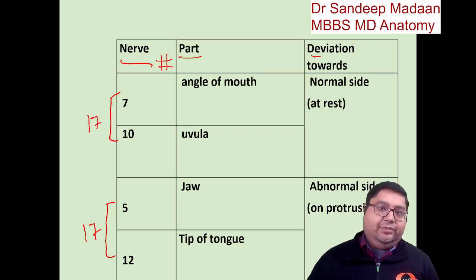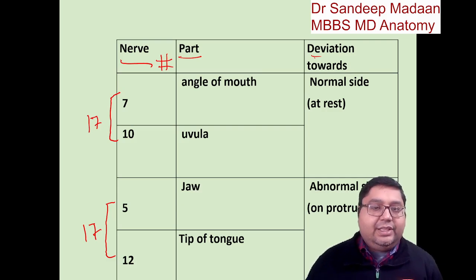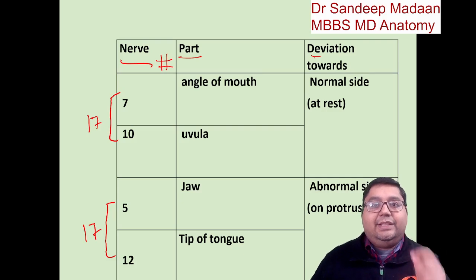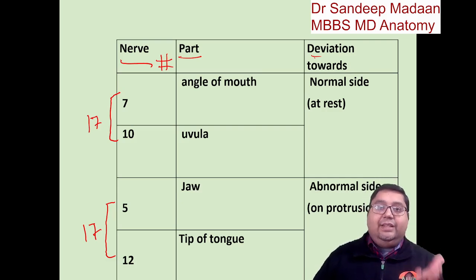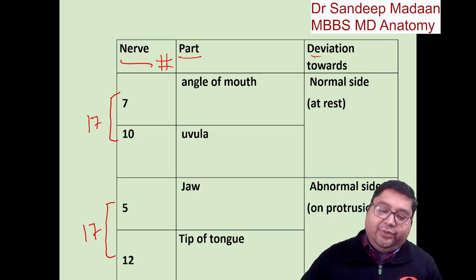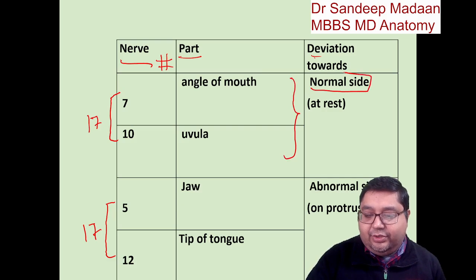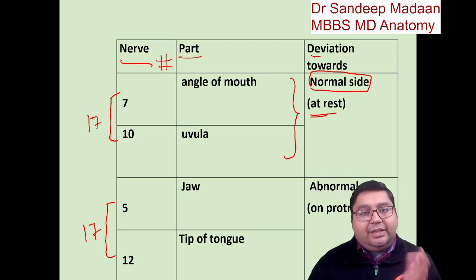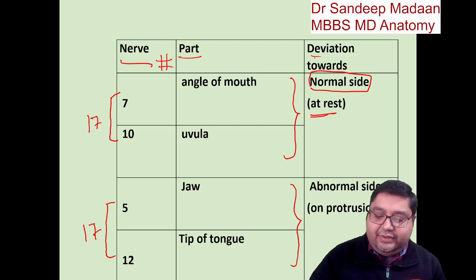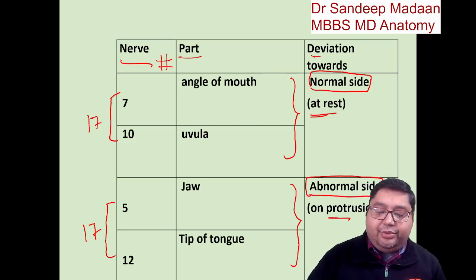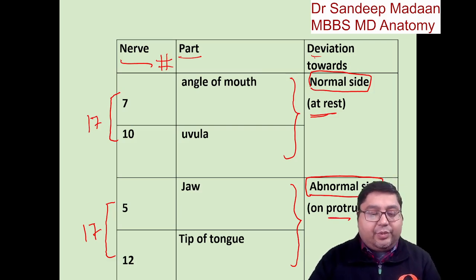For cranial nerve 7 injury, the angle of the mouth is deviated. For the 10th nerve, the uvula is deviated — we ask the patient to say 'ah' to visualize it. For the 5th nerve, the jaw deviates on protrusion. For the 12th nerve, the tip of the tongue deviates on protrusion. Cranial nerves 7 and 10 deviate towards the normal side at rest, while cranial nerves 5 and 12 deviate towards the affected side but only on protrusion — at rest, there is no deviation.